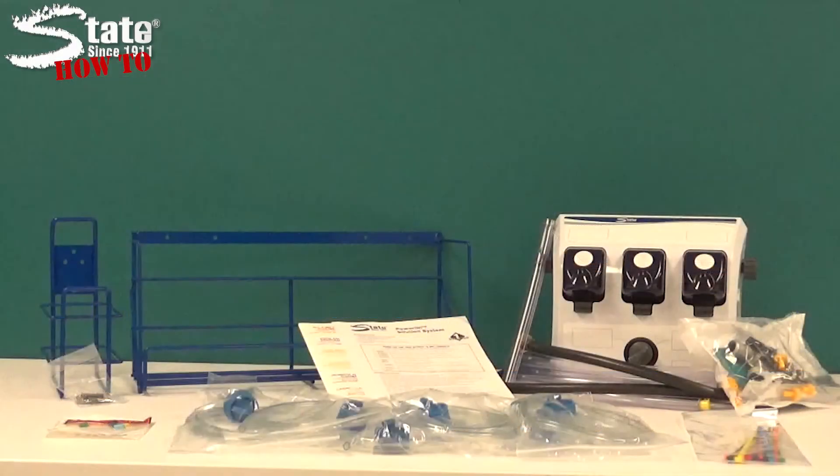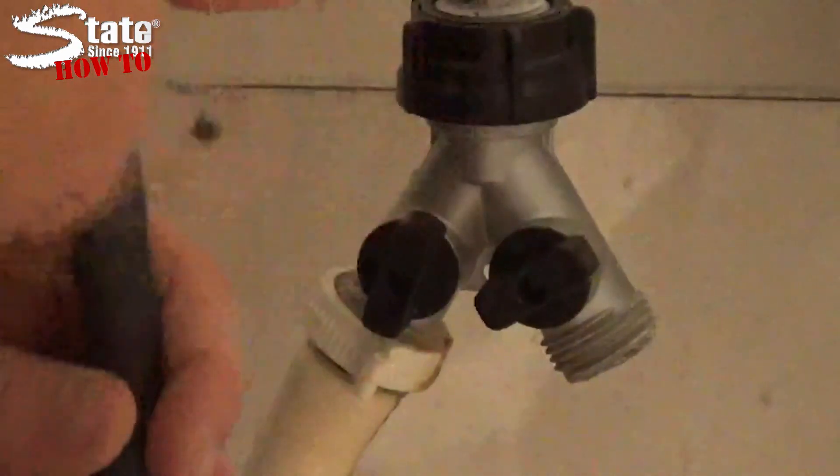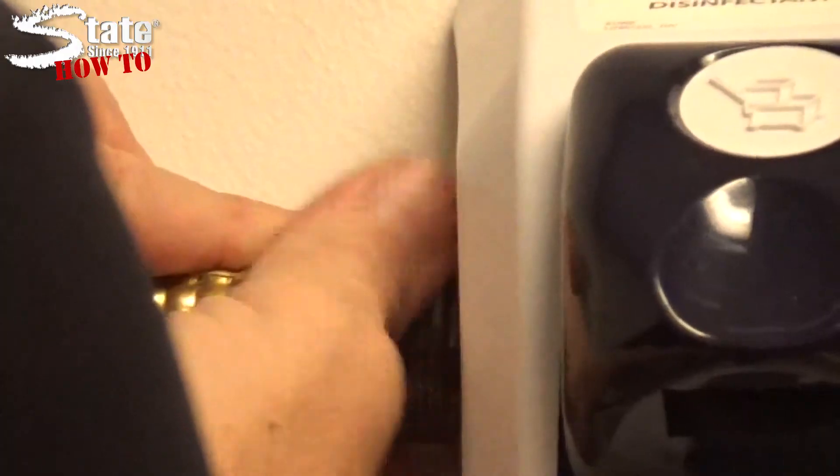For this step, you will need the provided Y connector and the water hose. Screw the Y connector hose onto the faucet of your slop sink. Then, hook one end of the hose up to the Y connector and the other end to the side water port of the One Solution system.